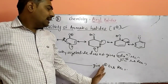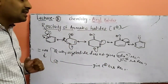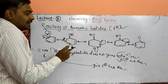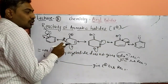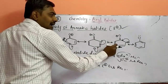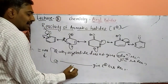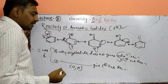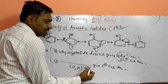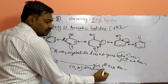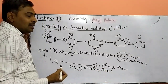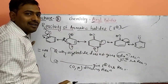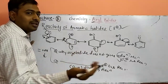Why does arene give electrophilic substitution type of reaction? When you observe the resonating structures of the compound, we get negative charge at the ortho position, negative charge at the para position, and negative charge at the ortho position. This means that substituted arenes give ortho-para directing reactions. Electron density is greater at the ortho and para positions, so an electrophile can easily attack from those positions.